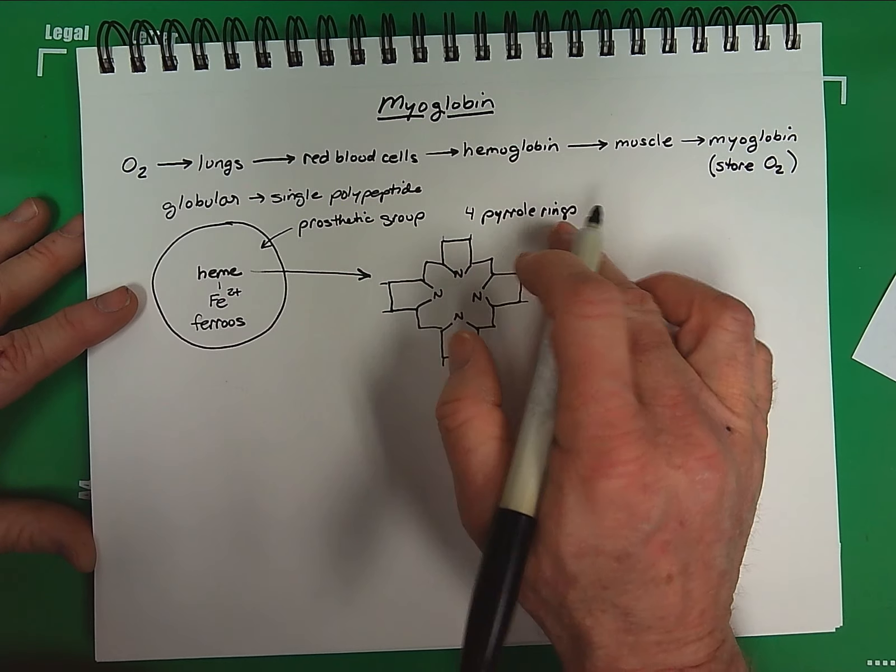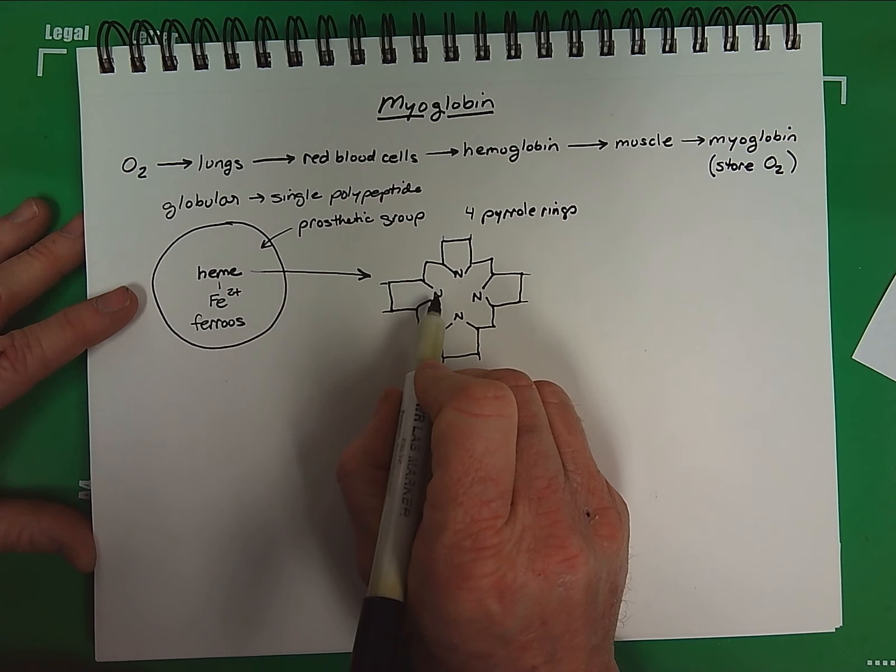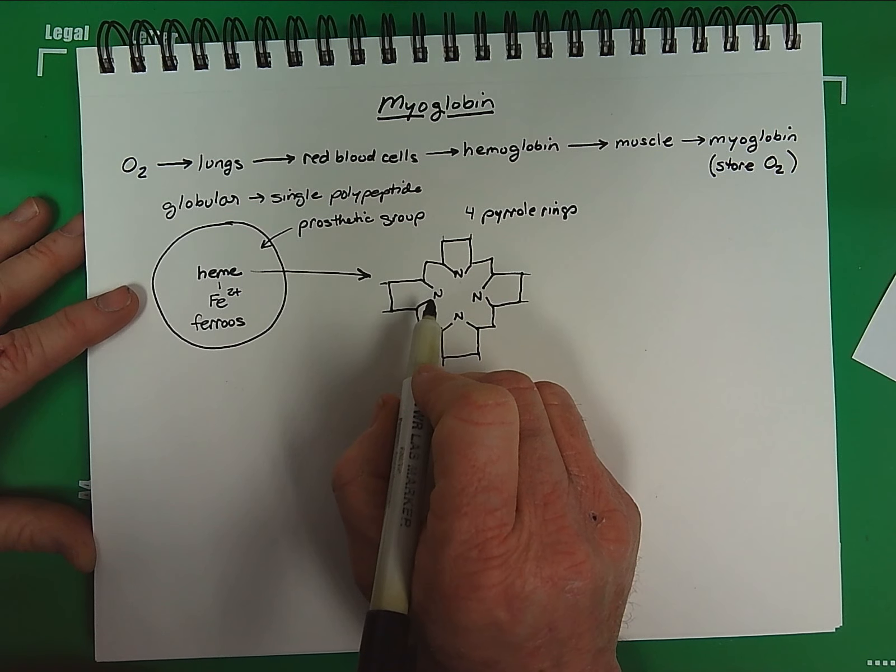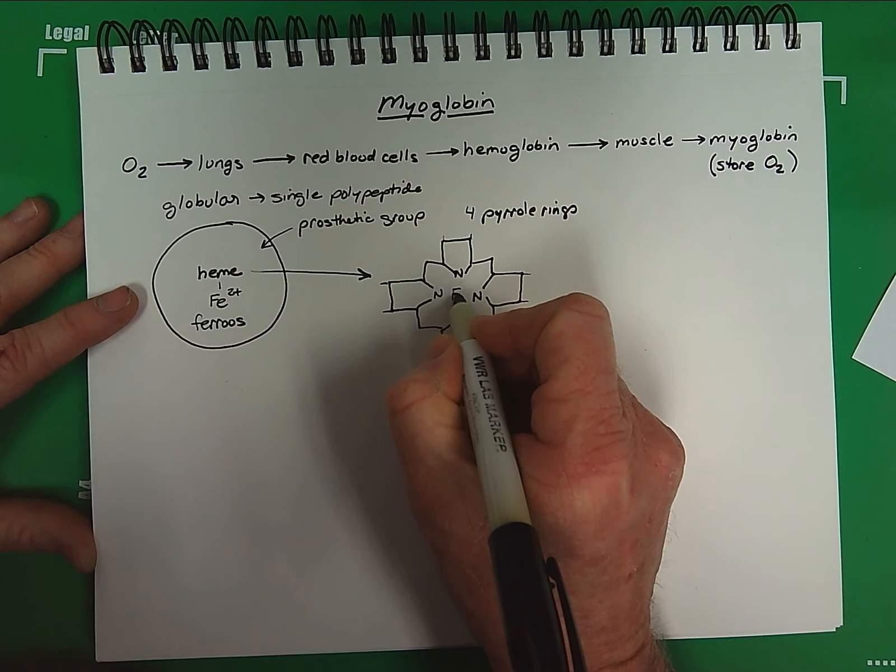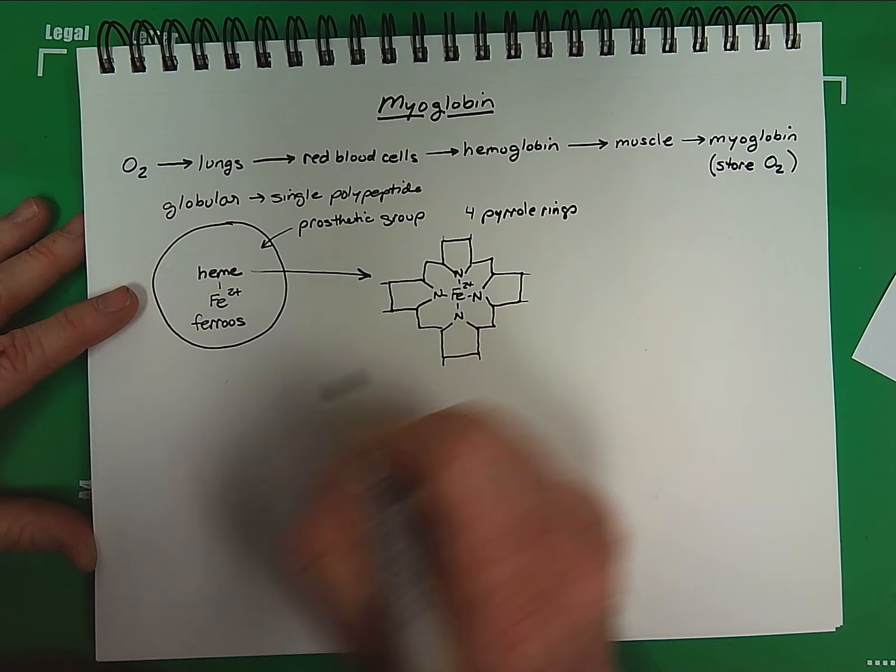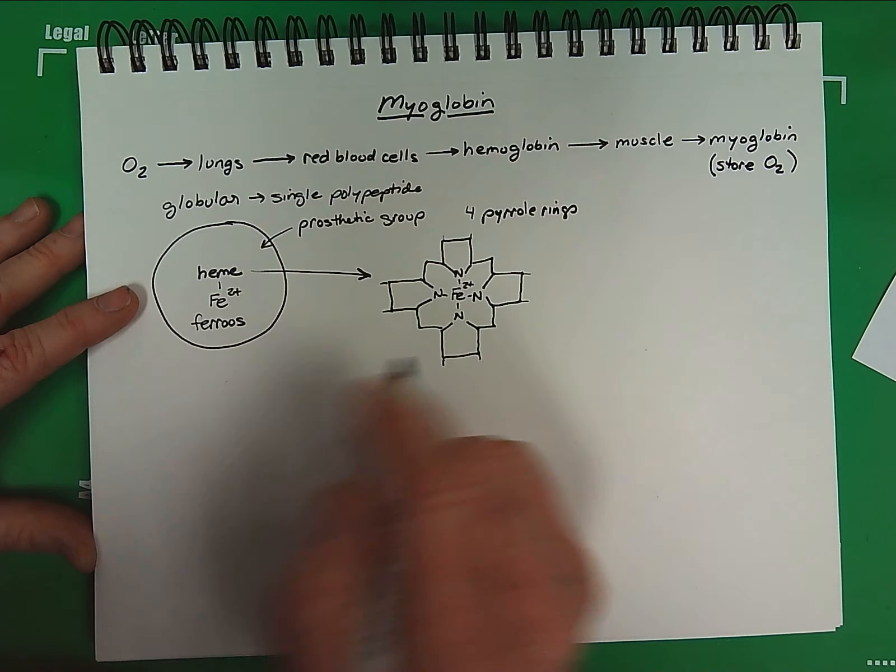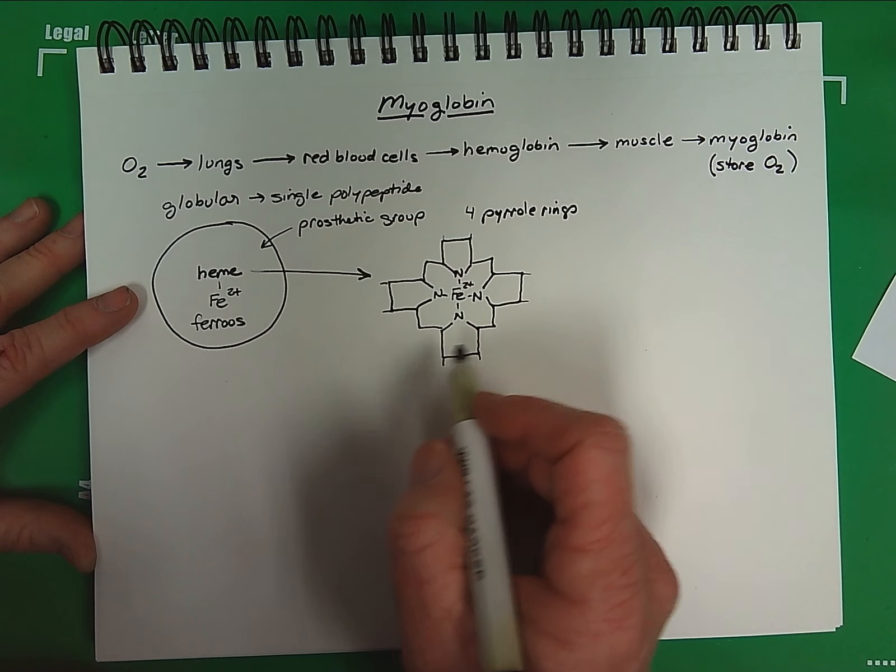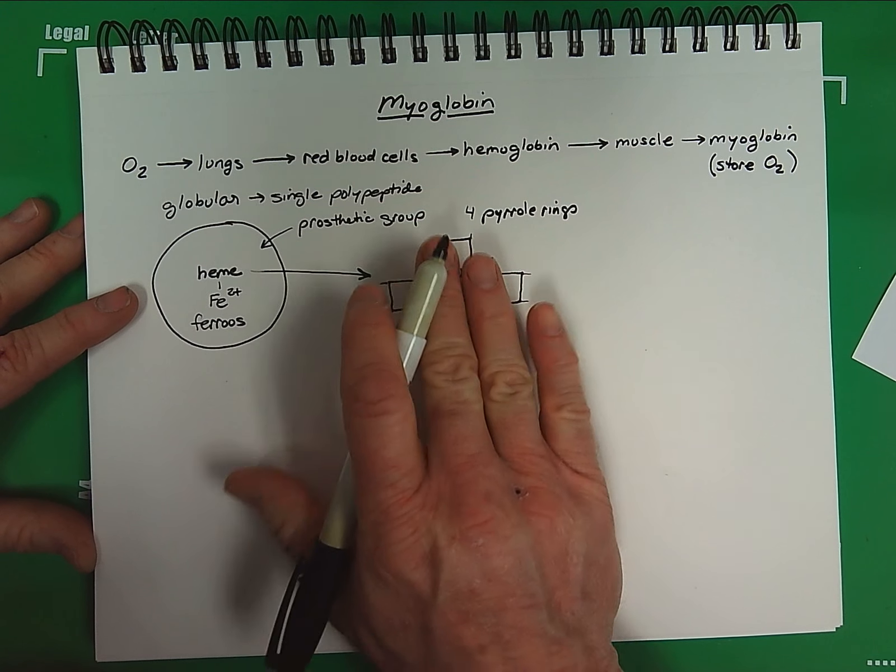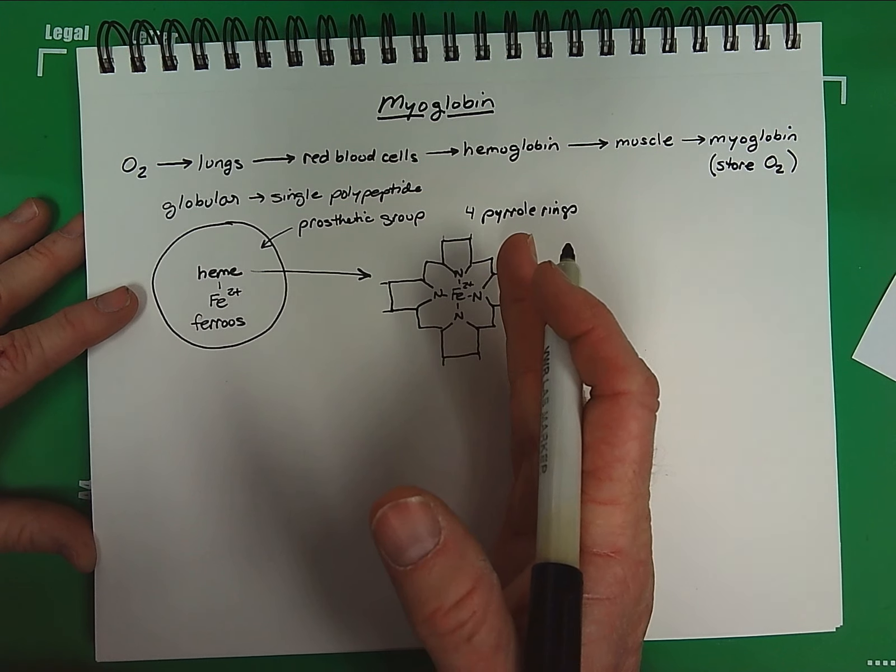The importance of the pyrrole rings are the nitrogens on these rings face inward. These nitrogens, then, can be a coordinated binding site for iron in the center. Now this is the basic structure of heme, but in order to look at the functional properties of heme iron, we need to take this structure and turn it 90 degrees.